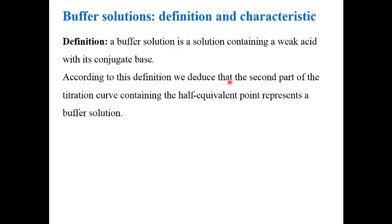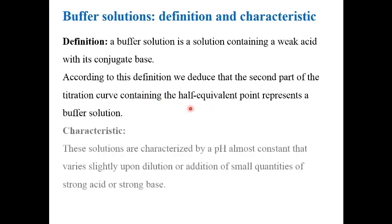This is not new — we worked with the Henderson-Hasselbalch equation under exactly that condition. According to this definition, the second part of the titration curve — for a weak species with a strong species — containing the half-equivalence point represents a buffer solution, because at half equivalence we have the weak acid and its conjugate base, or the weak base and its conjugate acid.